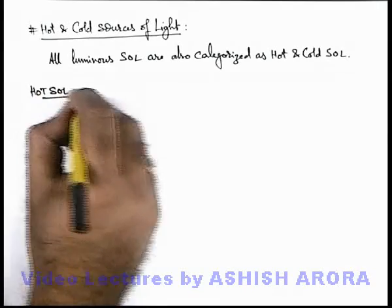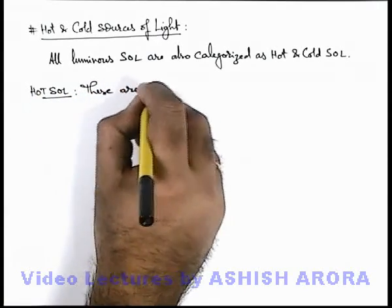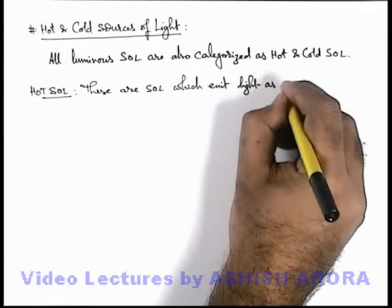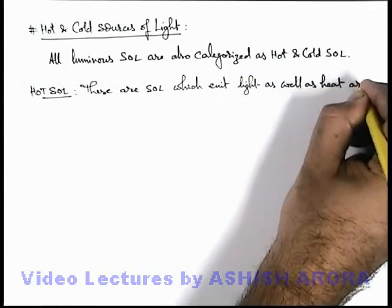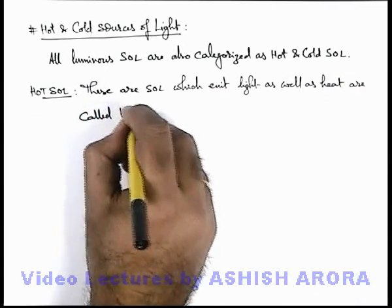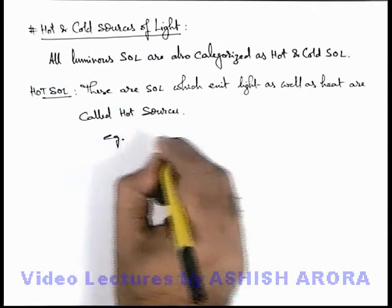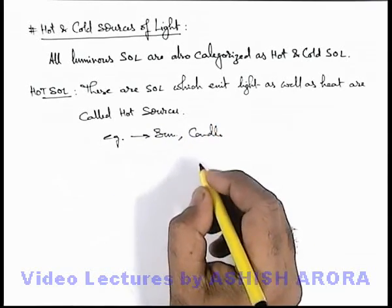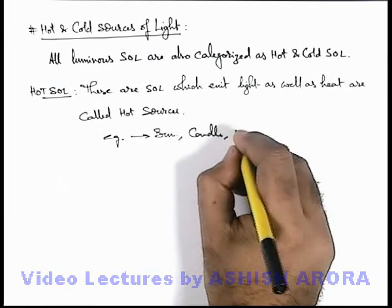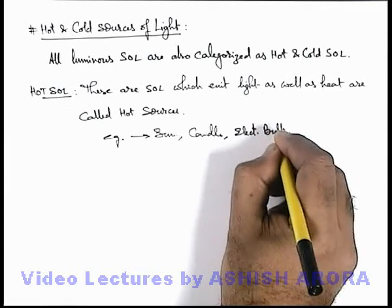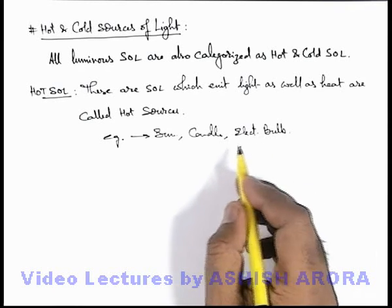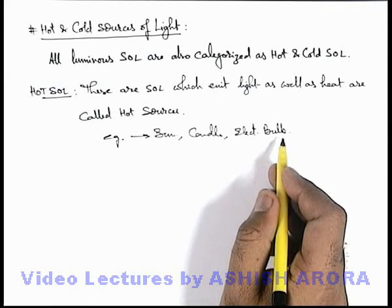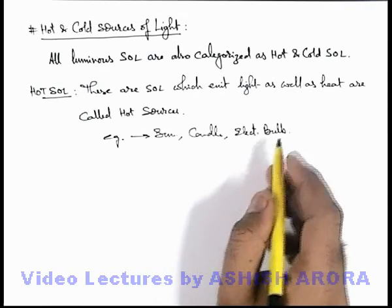If we talk about hot sources of light, these are sources of light which emit light as well as heat. When we talk about a candle, that also produces light as well as heat. And if we talk about an electric bulb, when current is passed through a bulb, due to the heating effect of current it gets heated up and emits light. So these are the sources which produce light as well as heat, and these are called hot sources of light.